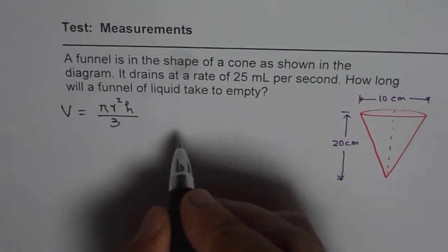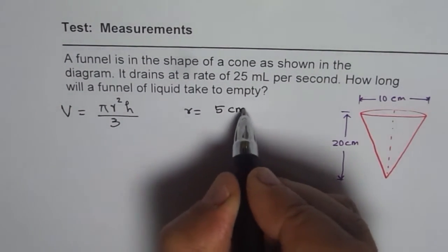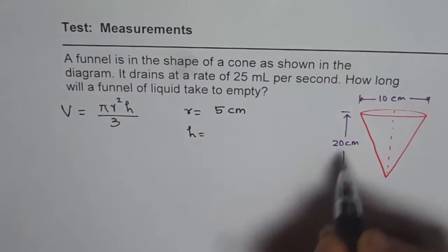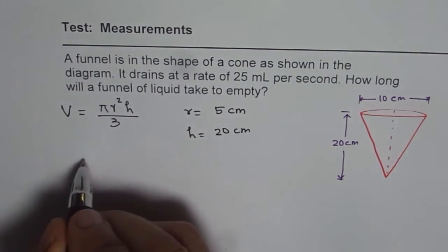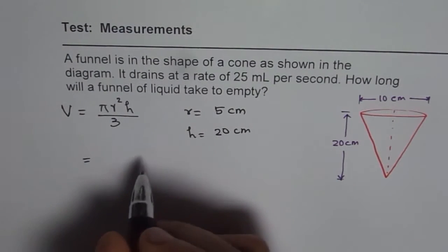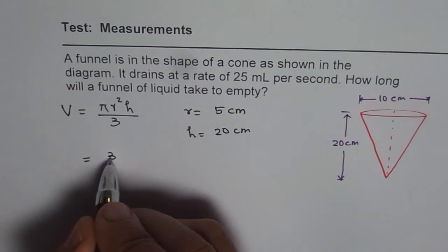Now in this particular case, radius is half of the diameter so it is 5 cm and height is given to us as 20 cm. We can equate these values. So π you can write as 3.14 approximately or you can use the value of π from the calculator.